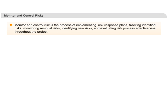The last step in risk management is monitoring and control of the risk management activities, which involves tracking identified risks, monitoring residual risks, identifying new risks, and evaluating risk process effectiveness throughout the project. The inputs to this process are the risk register.